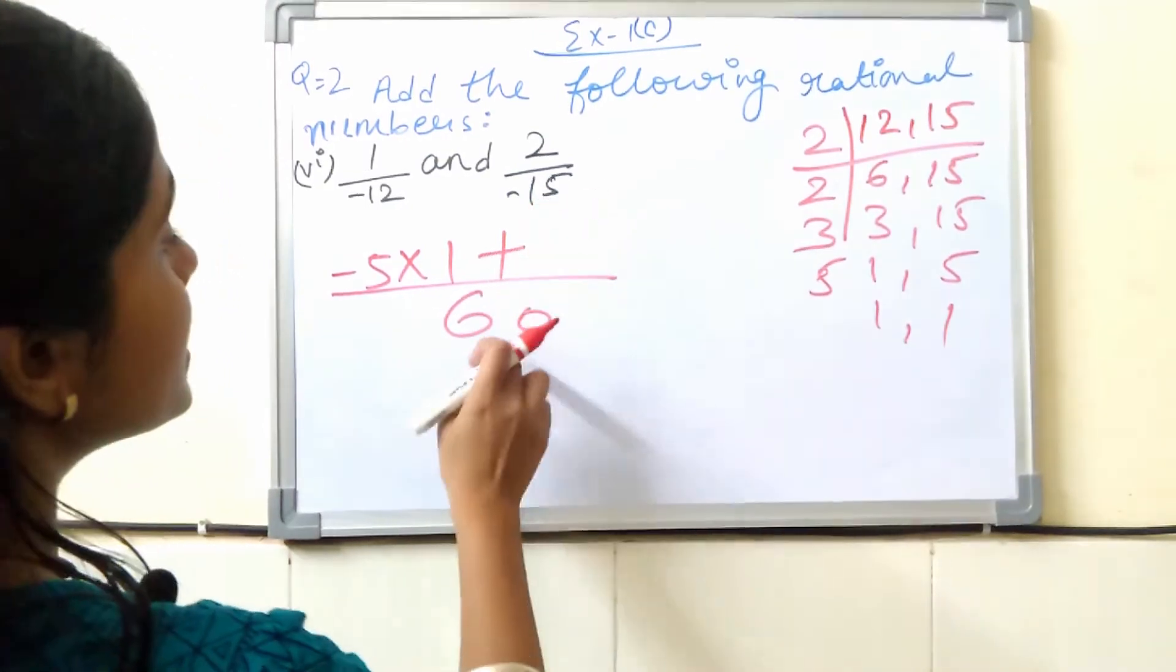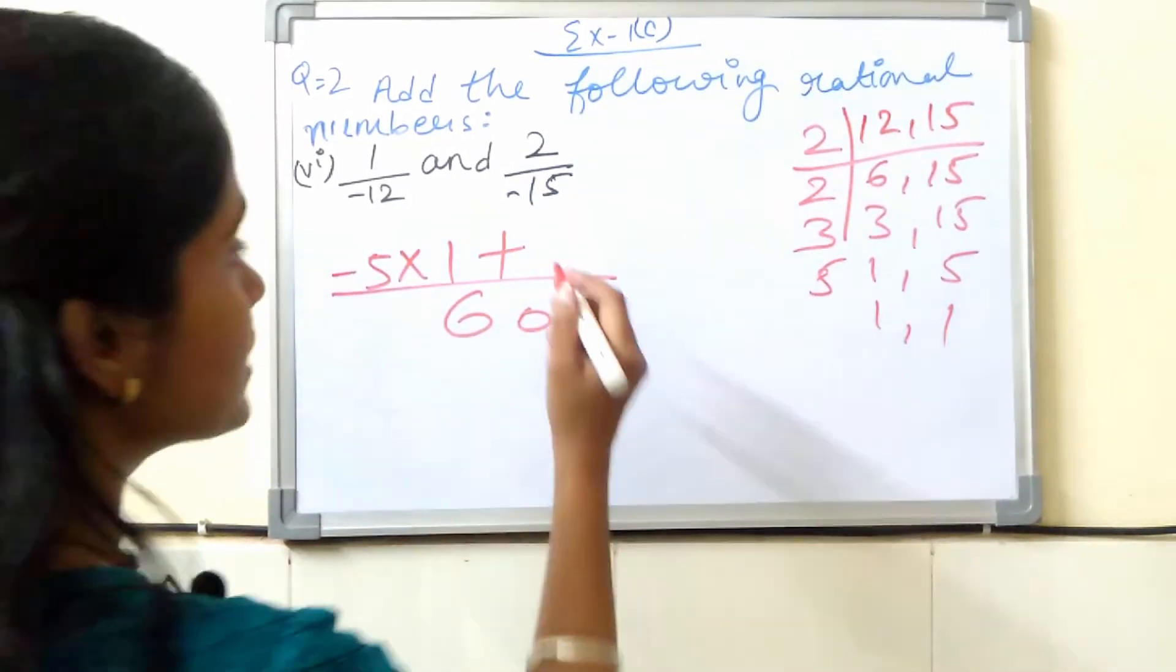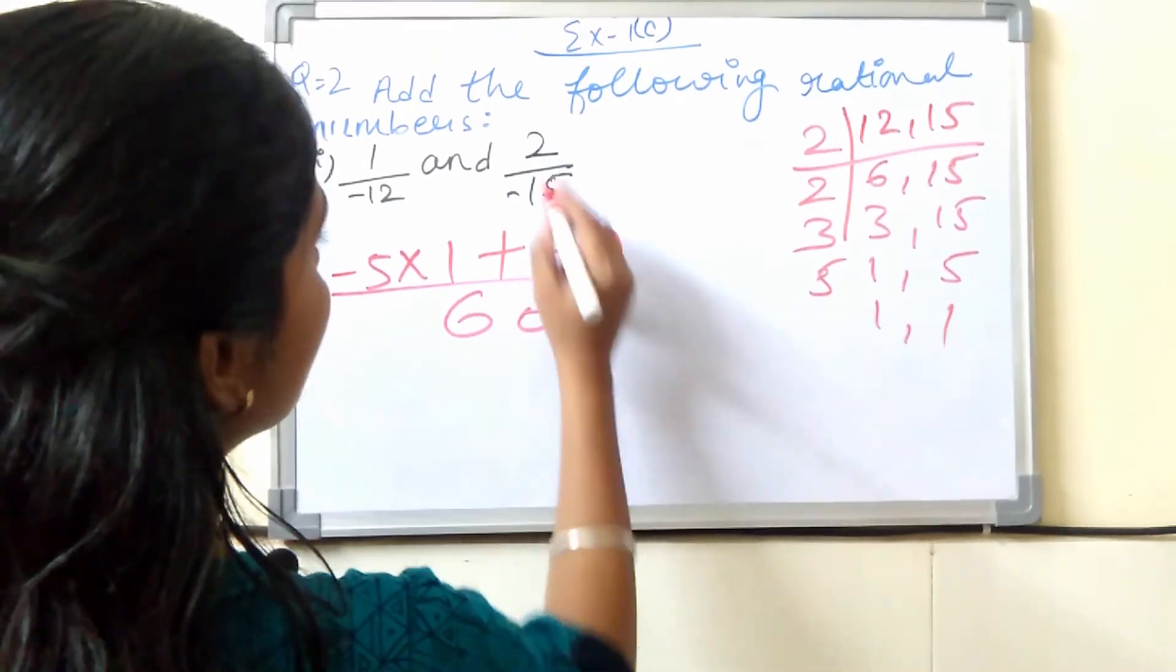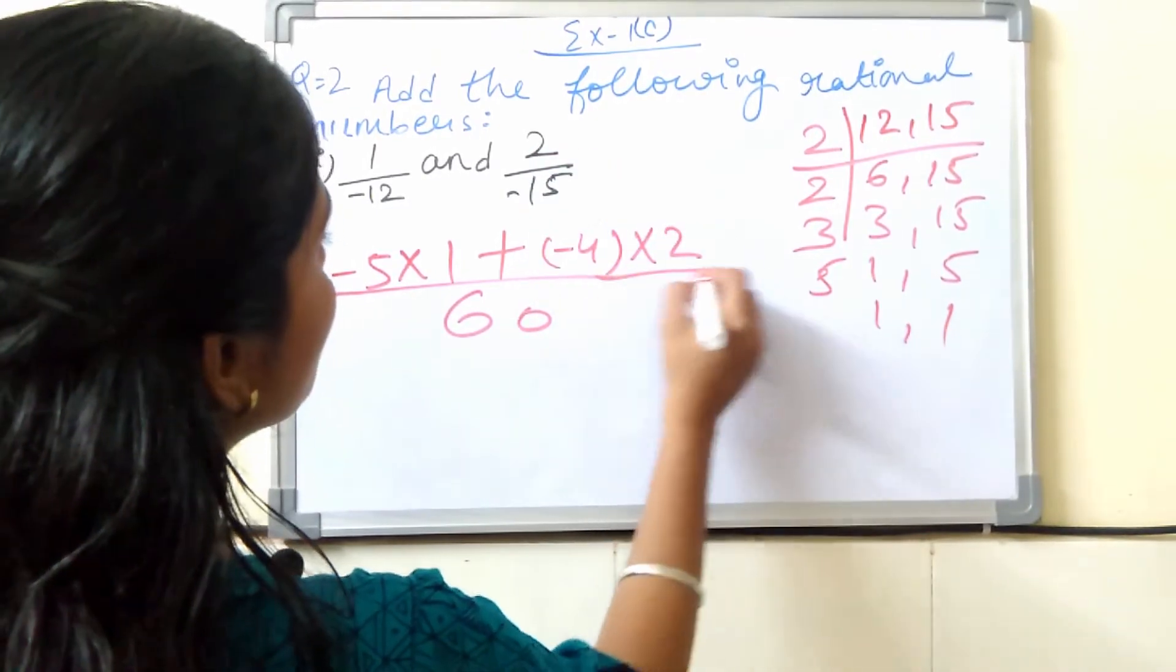Plus, minus 15 into 60, how much will it be? Minus 4 times. Okay, my child. Minus 4 times, and into 2.